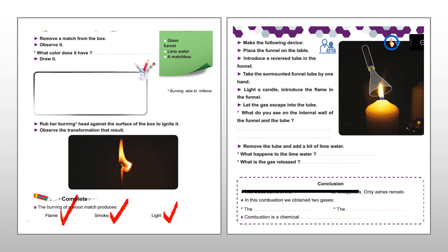Remove the tube and add a bit of lime water. What happens to the lime water? What is the gas released? Since the gas released is carbon dioxide gas, so the lime water will turn milky or cloudy.